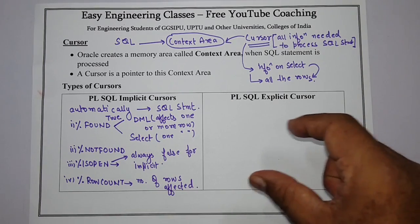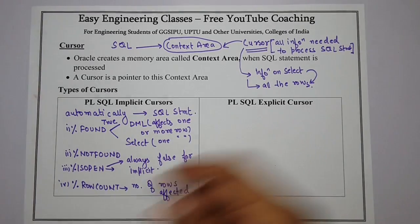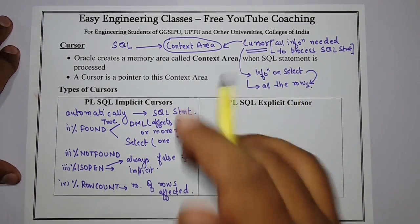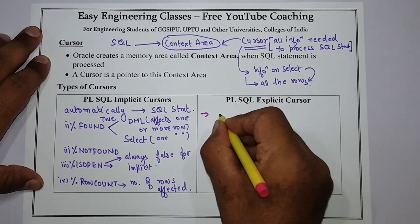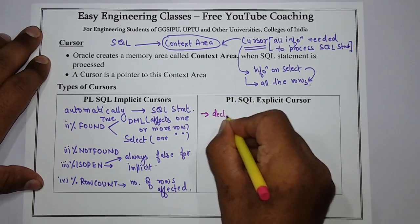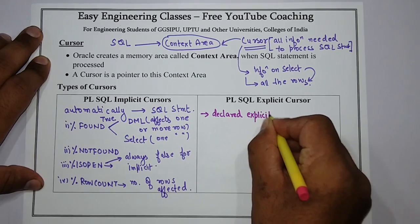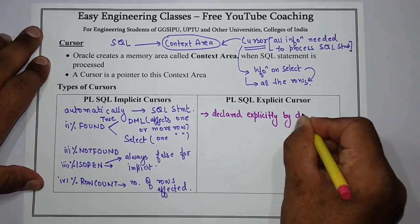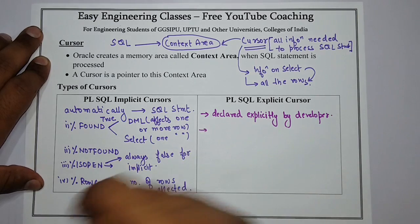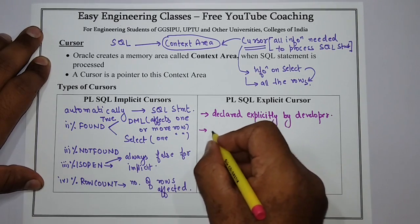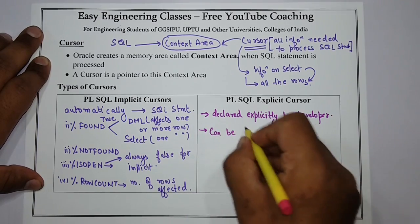These are the attributes commonly used when writing any PL/SQL cursor program. Now we will see what PL/SQL explicit cursors are. Explicit cursors are declared explicitly by the developer and can be manipulated through specific statements in the block's executable section.